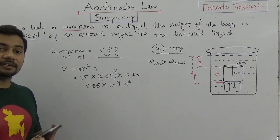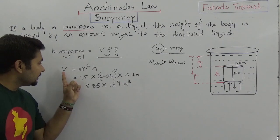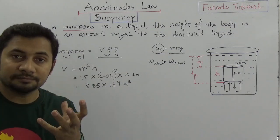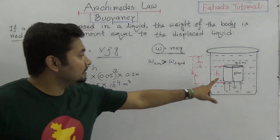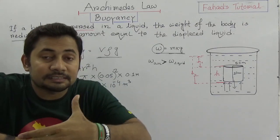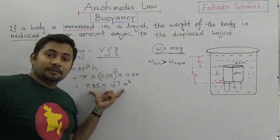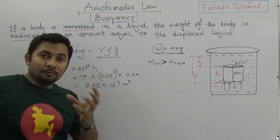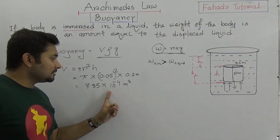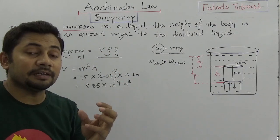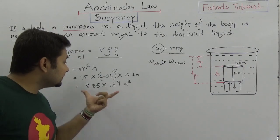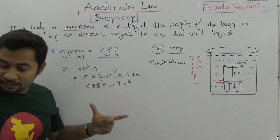Now, you think about one thing: this is the amount of volume of this object. So that means it will displace this same amount of water when it is immersed into the water. So this is the volume in cubic meters. Now we need to find the amount of weight of the amount of displaced water.